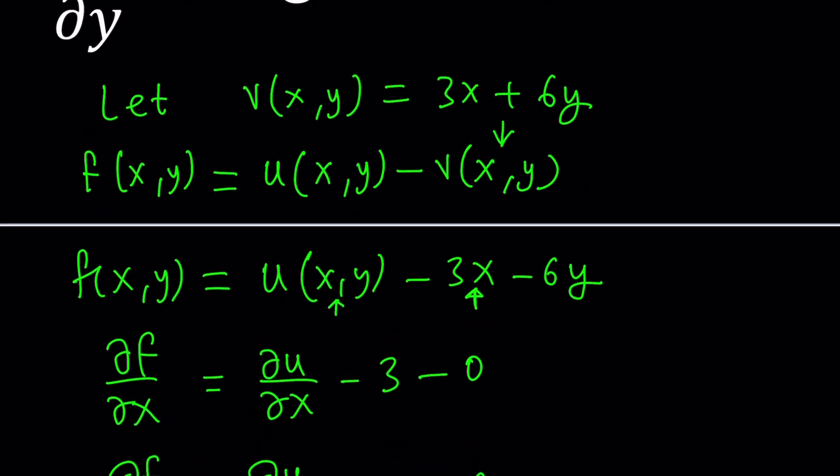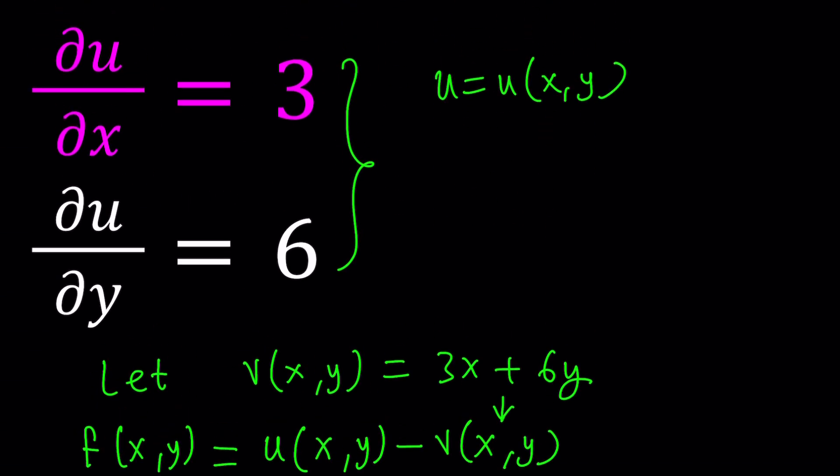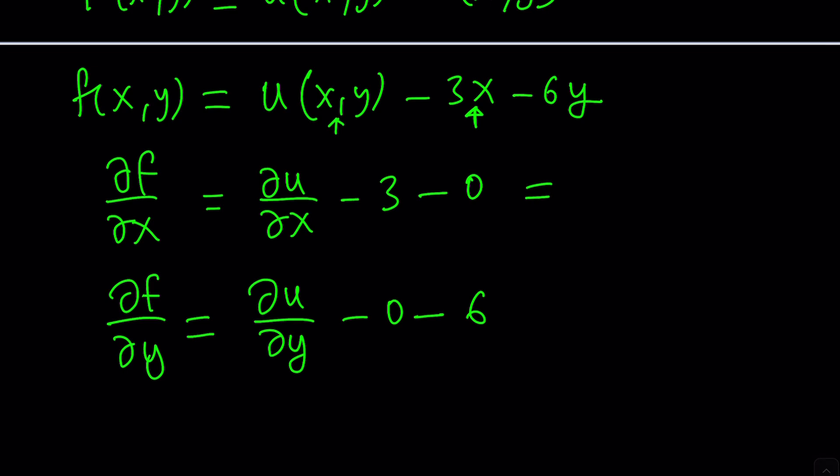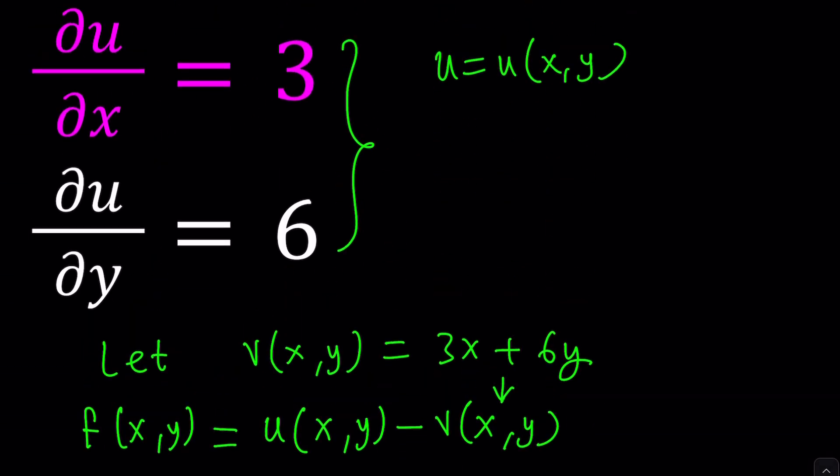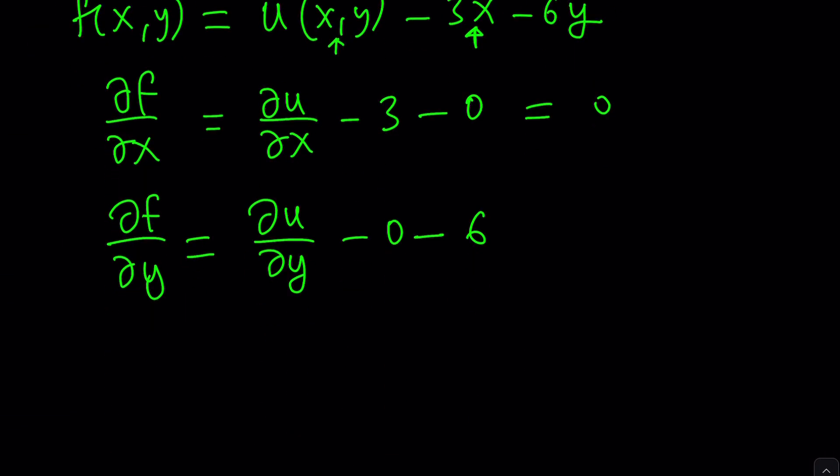What is ∂u/∂x? We know that ∂u/∂x is given as 3. So this is 3 - 3, which is 0. And ∂u/∂y is 6. So 6 - 6, this is equal to 0 again.